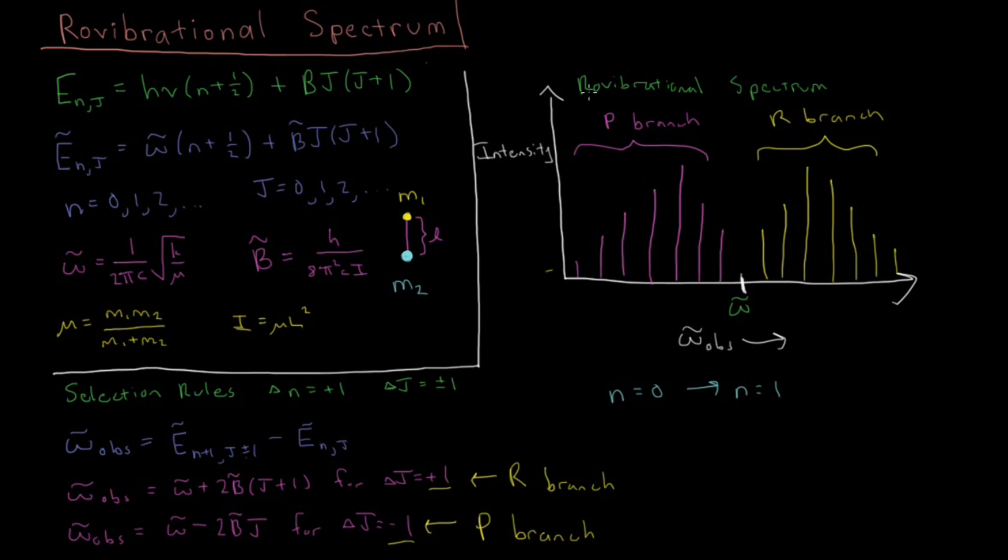So for now, we're just going to be focused on the fact that we have this ro-vibrational spectrum. The selection rule for absorption is Δn = +1 and we can have Δj either go up 1 or down 1 giving us the P branch of -1 and the R branch of Δj = +1.